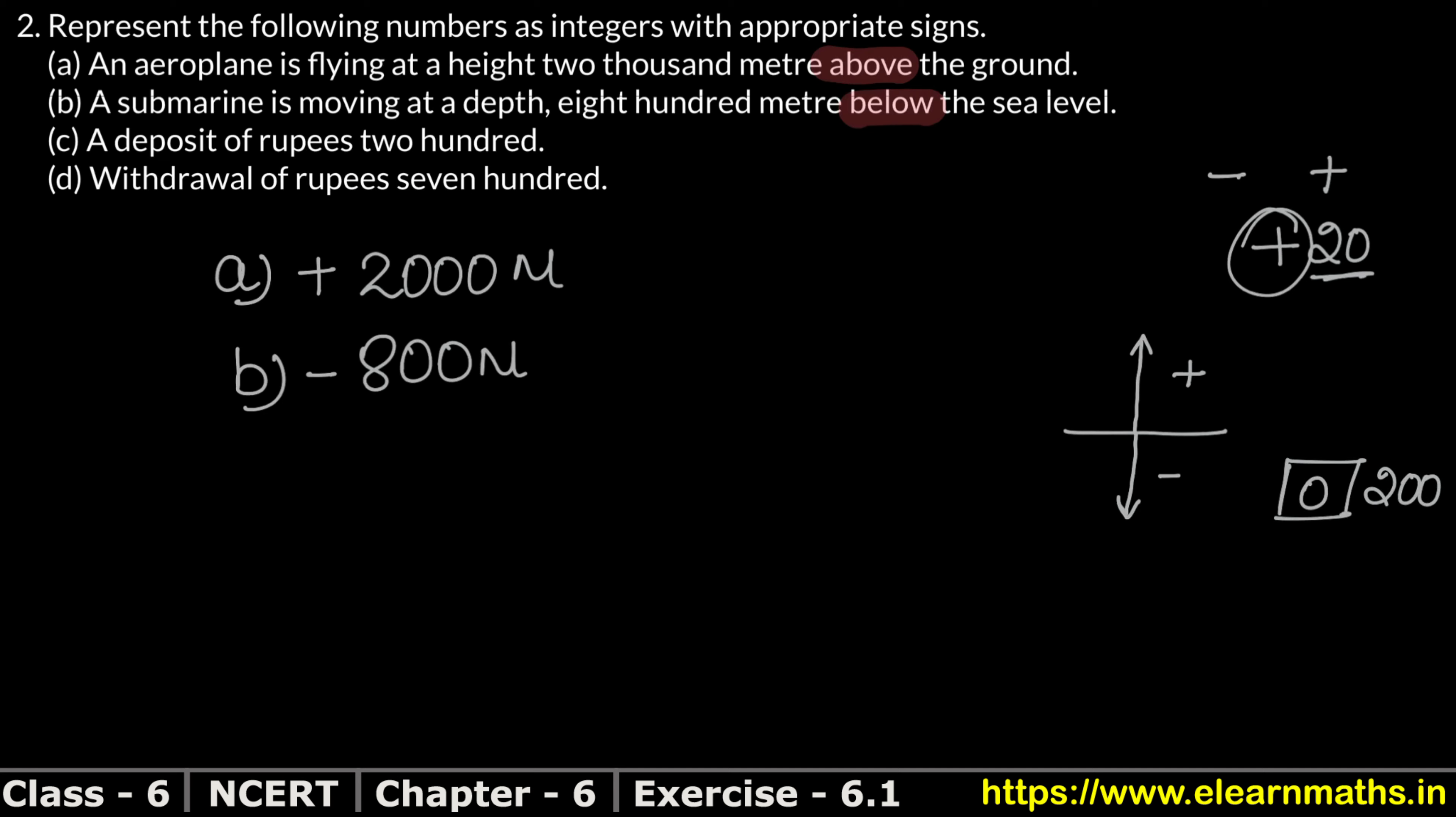So from zero it became 200 rupees. Did it increase or decrease? Deposit means increase. So deposit means what? It will be plus. Plus 200 rupees. But if its opposite was withdraw, then it would be minus, just like our part D.